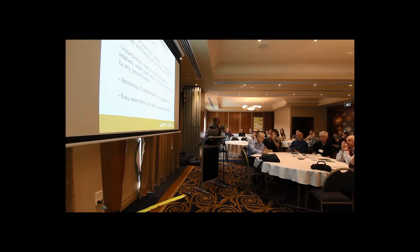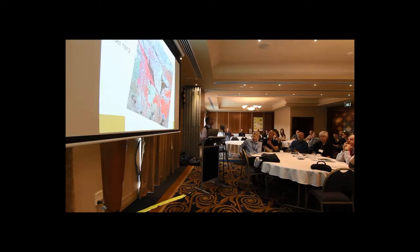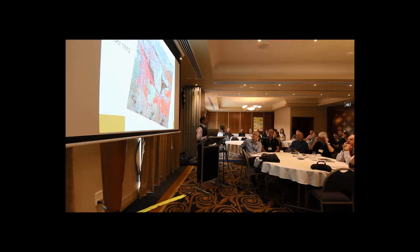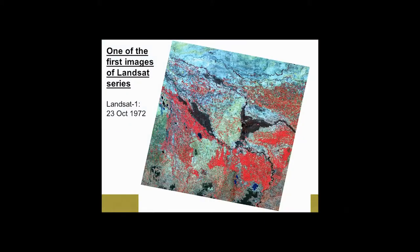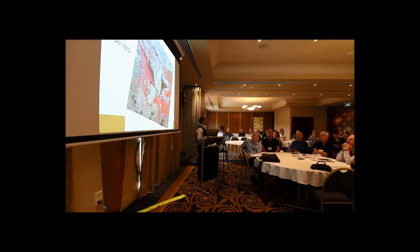Just going back in history: one of the most popular satellite systems is called Landsat. The series started in 1972. This is one of the first pictures from the satellite for the area we're interested in, taken on the 23rd of October 1972, Landsat 1. The significance of that is we know the date and how far back you could go.